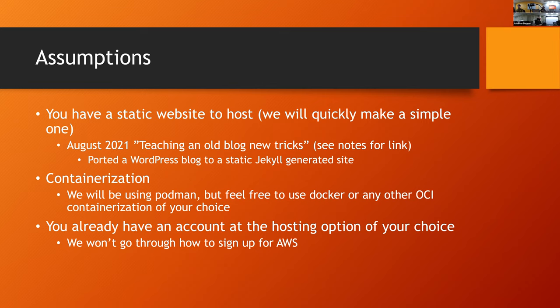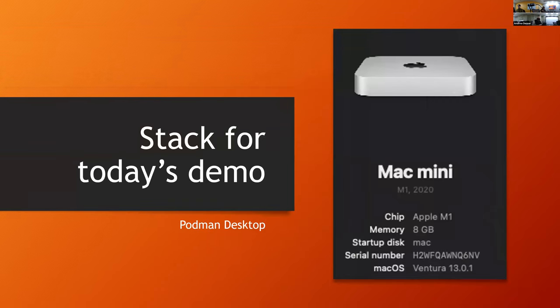I'm not going to walk you through signing up for AWS — there are plenty of blogs on the internet that will walk you through that. It's really not that hard; all they want to know is your credit card number, cell phone, date of birth, and first-born child's name — all of the above. As a hardware note, this demo was done on a Mac Mini M1.